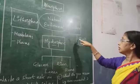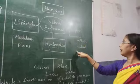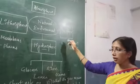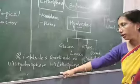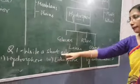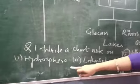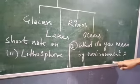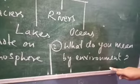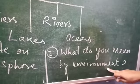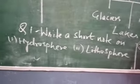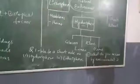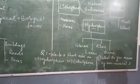This is the flow chart summary. There are two questions related to this video. Question one: write a short note on hydrosphere and lithosphere — write four lines. Question two: what do you mean by environment? Try to solve these questions. Thank you, students. See you next time. Bye.